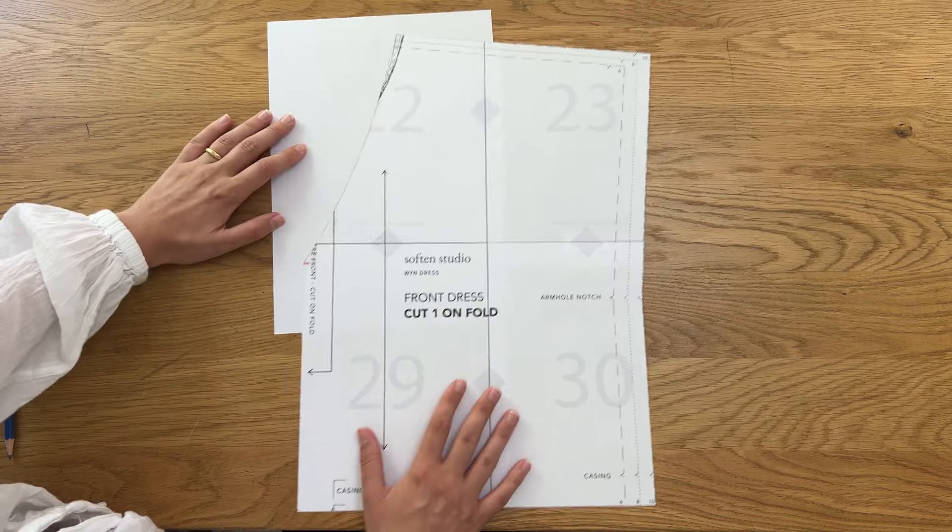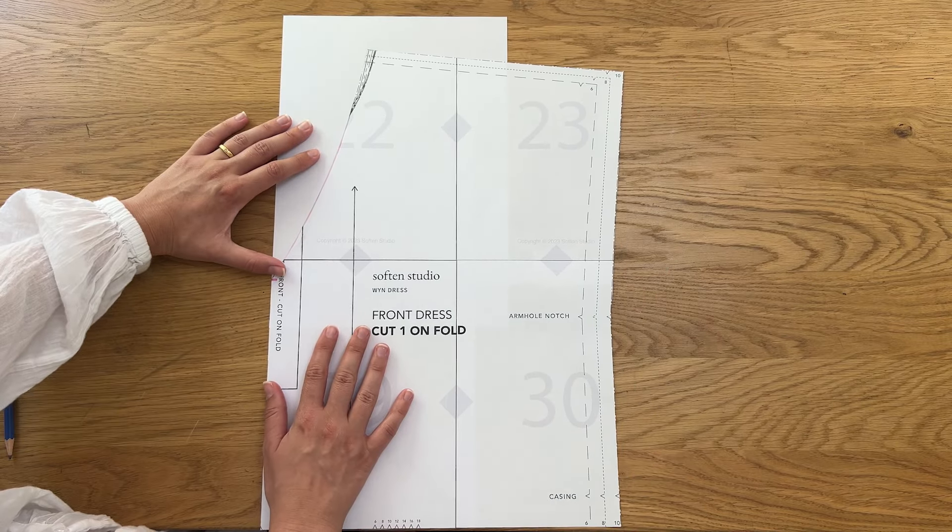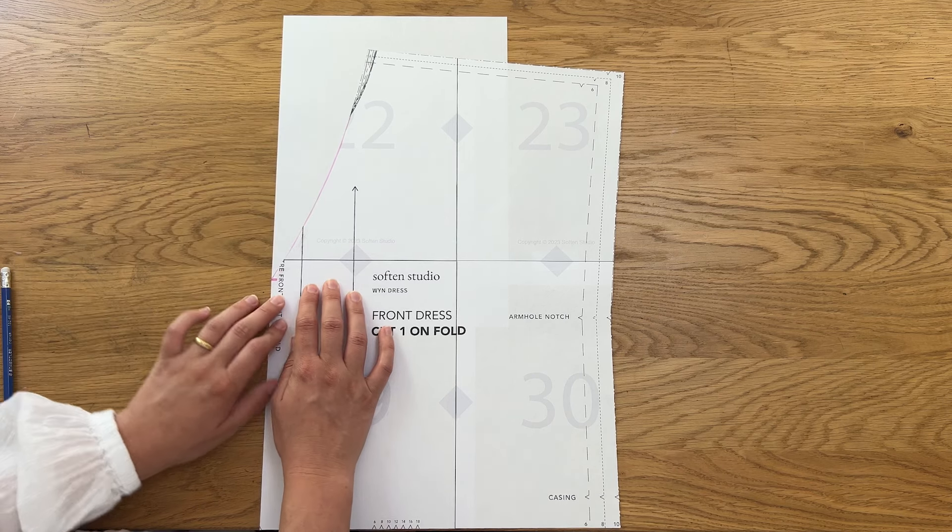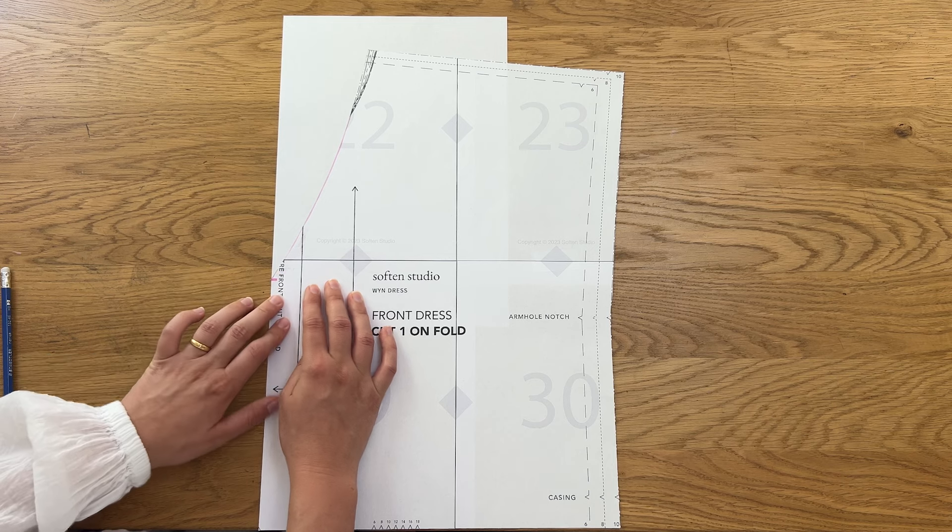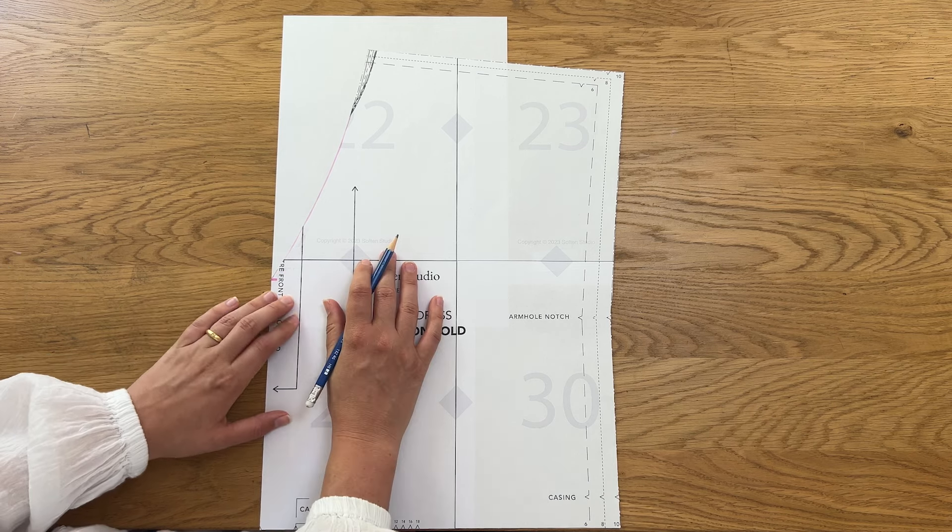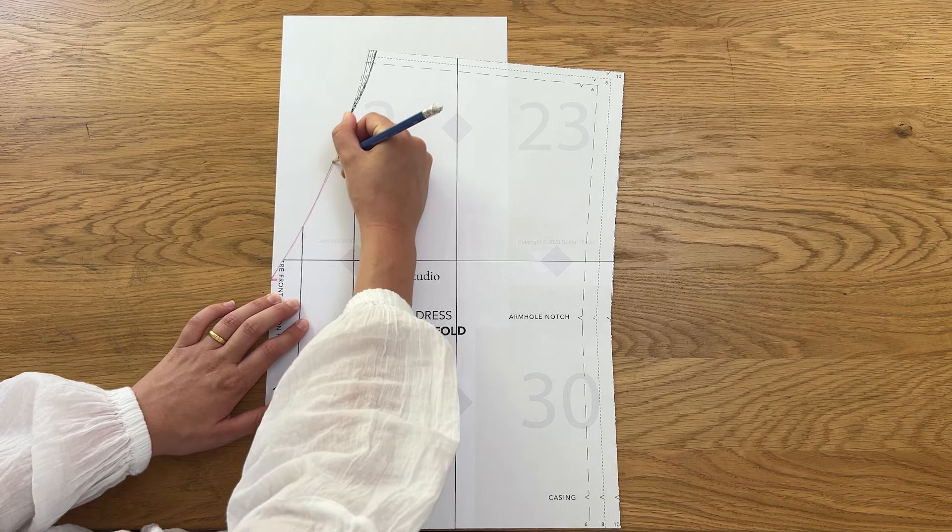We'll now create a new facing piece to match this new neckline. Place a piece of paper underneath the pattern and line up the center front with the straight edge of the paper. Trace the shape of the neckline and part of the shoulder onto the paper.